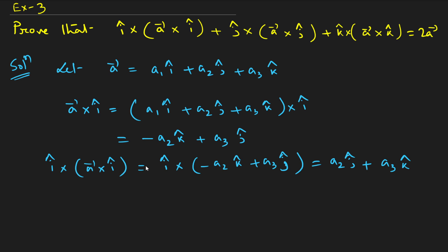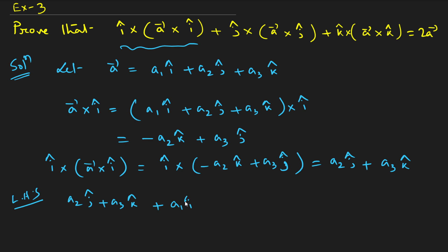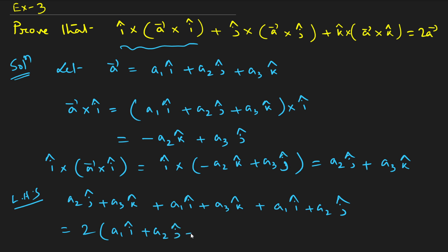Notice that when i is involved, no i component appears in the result; j and k come through. Similarly for the j term: no ĵ appears, giving a₁î + a₃k̂; and for the k term: no k̂ appears, giving a₁î + a₂ĵ. Each component appears exactly twice across all three terms, so the total sum is 2(a₁î + a₂ĵ + a₃k̂) = 2a. This confirms the result.